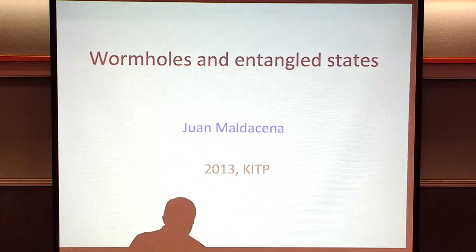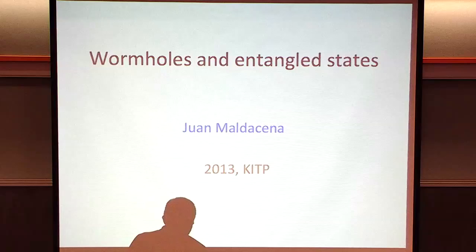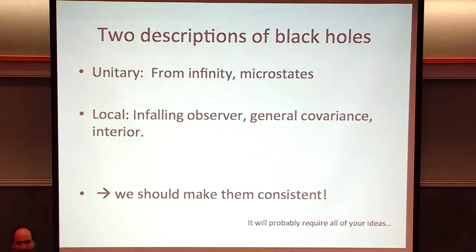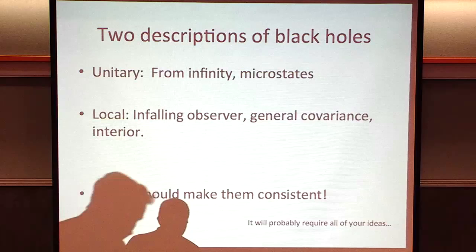Let me start with some generalities. We have these two descriptions of black holes: one from infinity, where we know through ADS-CFT the microstates, and on the other hand, the description from the falling observer. We should not give up on either of the two. We should make them consistent, and that's the challenge. Probably all of the ideas being discussed will be important for understanding how to make them consistent.